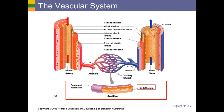Capillaries have very thin walls — basically consisting of a tunica intima by itself: a layer of simple squamous epithelial cells and a basement membrane. The capillary wall has to be very thin in order for substances to cross it. Later we'll talk about the different mechanisms by which substances cross this wall, including diffusion, osmosis, endocytosis, exocytosis, and a process called bulk flow — together making up capillary exchange, the last topic we'll cover in the cardiovascular system.